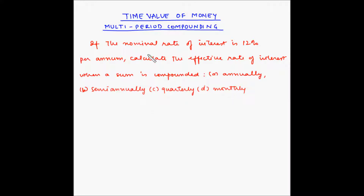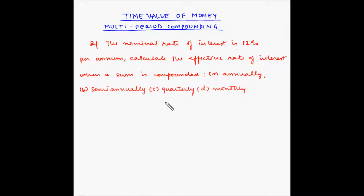As we know, the nominal rate of interest is generally expressed as a yearly interest. However, the effective rate of interest depends on how many times the interest is being compounded. So the effective rate of interest would be different when the interest is being compounded annually, semi-annually, quarterly, monthly, daily, hourly, and so on.